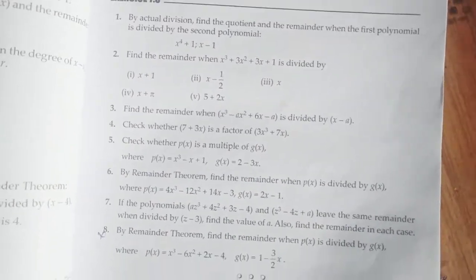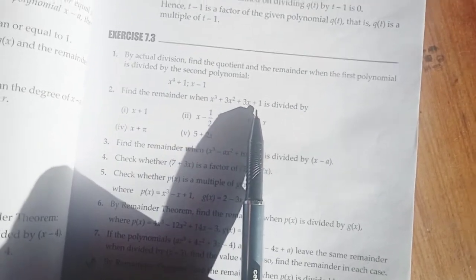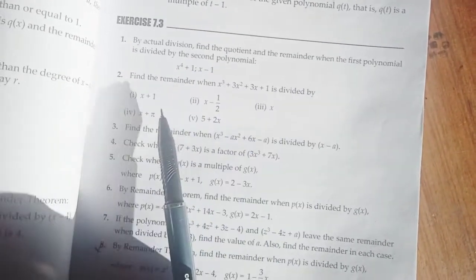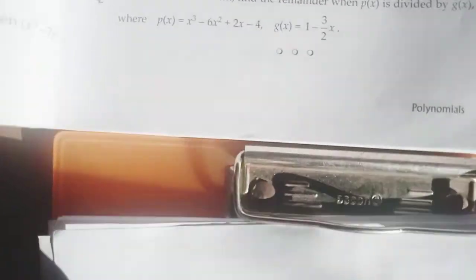Find the remainder when x cubed plus 3x squared plus 3x plus 1 is divided by x plus 1.